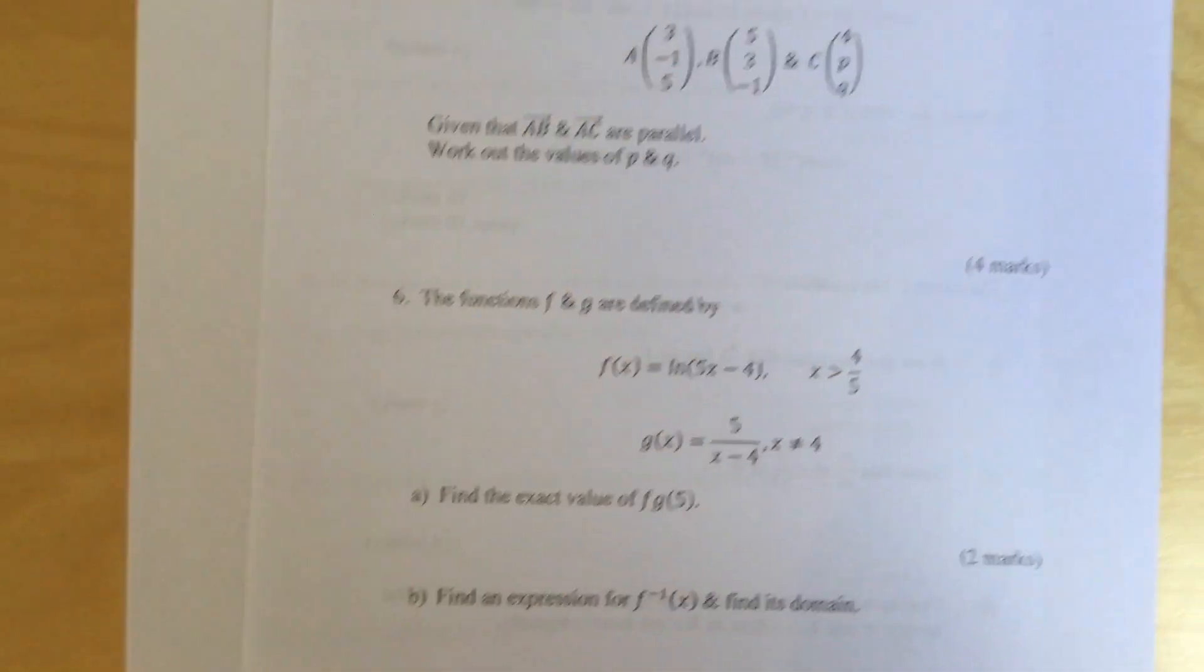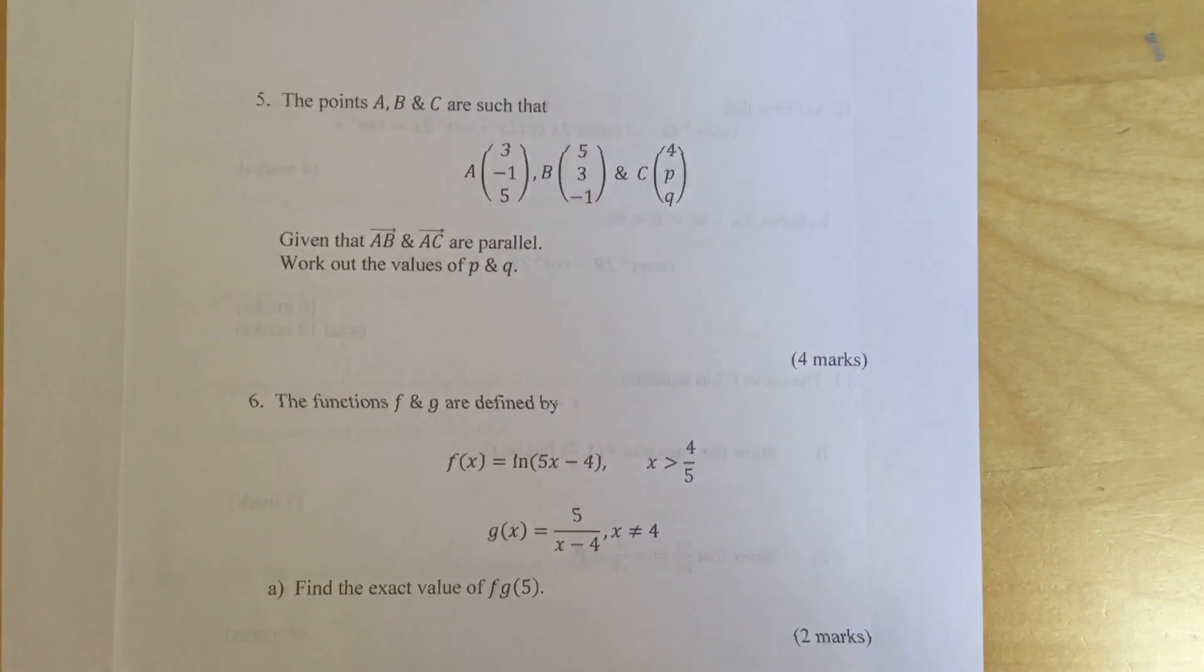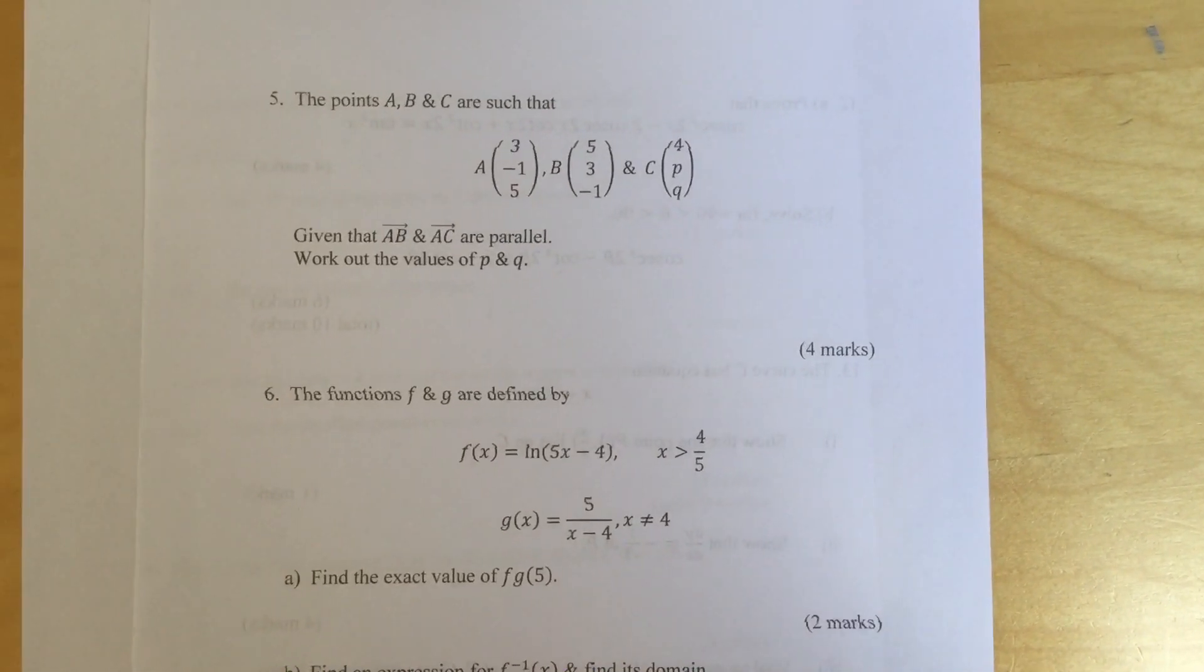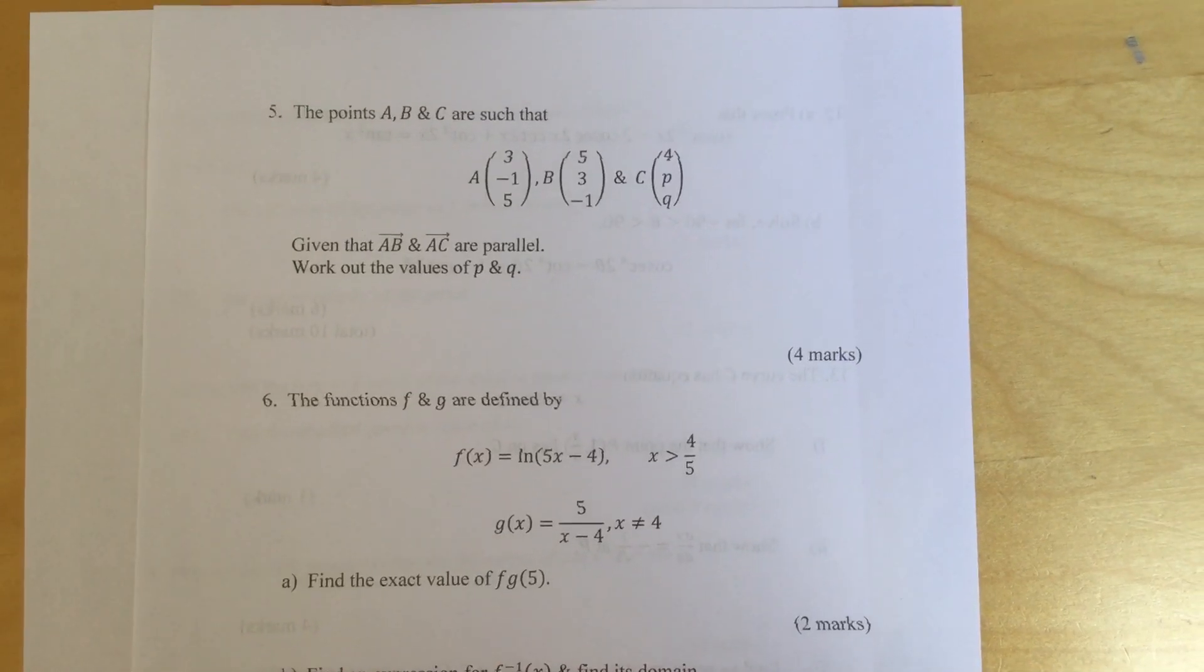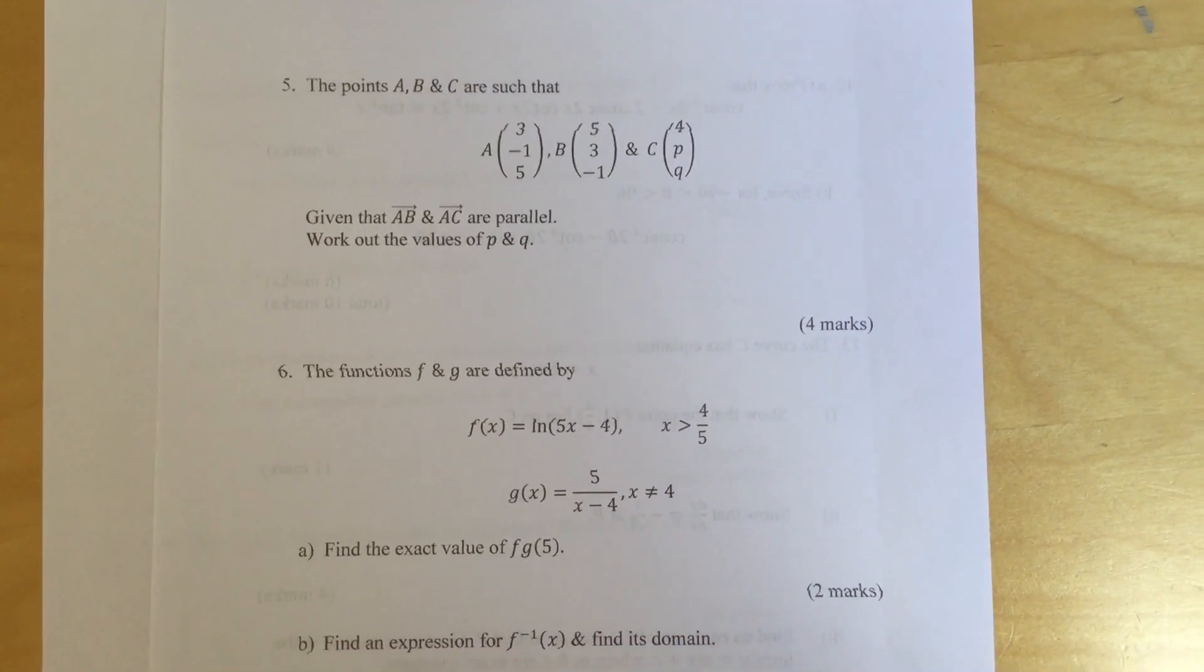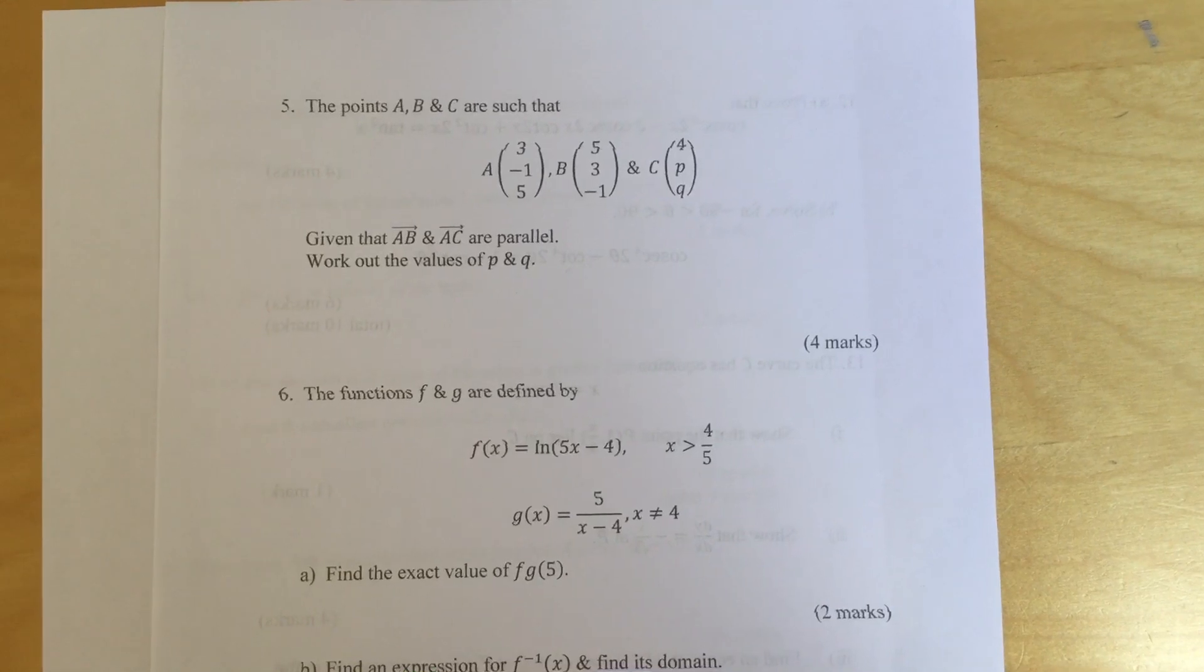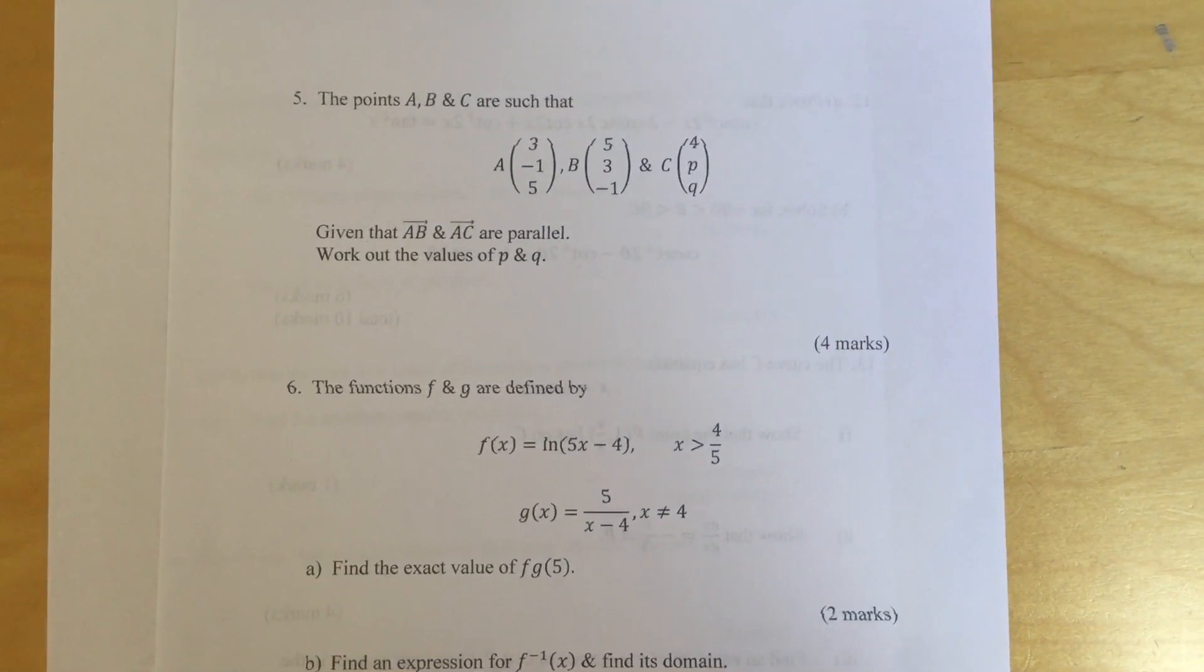Question 5: The points a, b and c are such that a is 3 minus 1, 5; b is 5, 3 minus 1; c is 4, p, q. Given that a, b is parallel to a, c, work out the values of p and q.